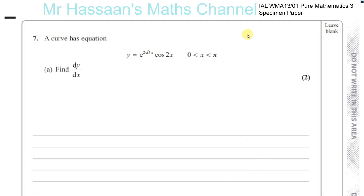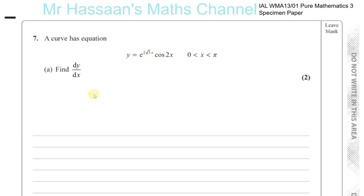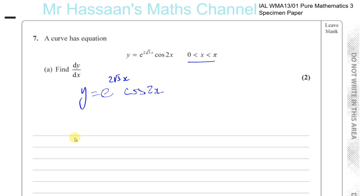This is question number 7 from the specimen paper for the P3 International A-Level. We have an equation which we have to differentiate: y equals e to the power of 2 root 3 times x, times cosine of 2x, valid between the limits of 0 and pi. So we've got this equation and we have to find dy/dx — we have to differentiate it.